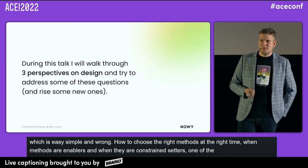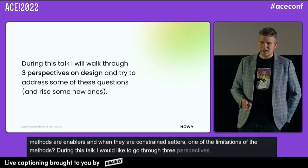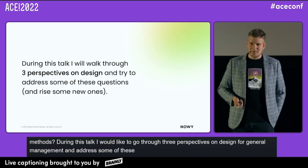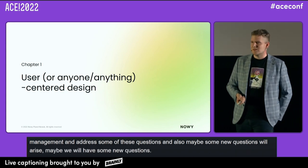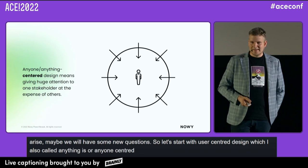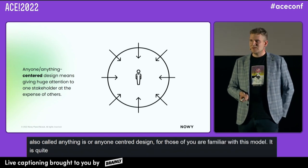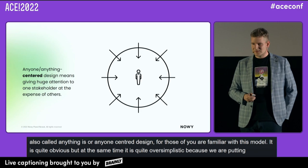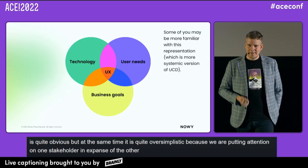I'd like to go through three different perspectives on design — and more generally on management — and address some of these questions. Let's start with user-centered design, which I also call anyone-centered design or anything-centered design. Probably all of you are familiar with this model. It's quite obvious, but at the same time it's quite oversimplistic, because we're putting attention on one stakeholder at the expense of others — we focus on the user, the client, the customer. What about the rest?